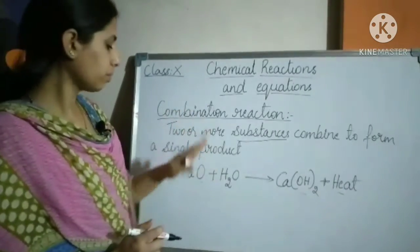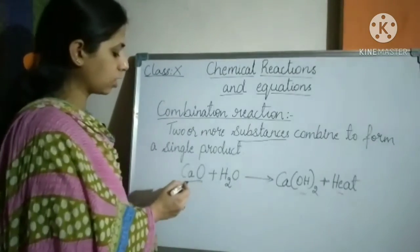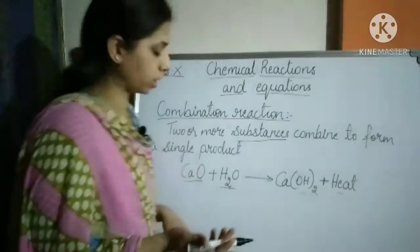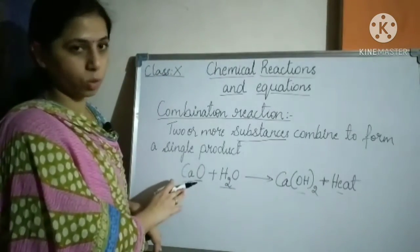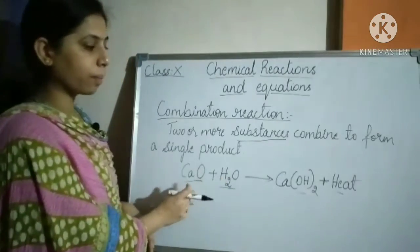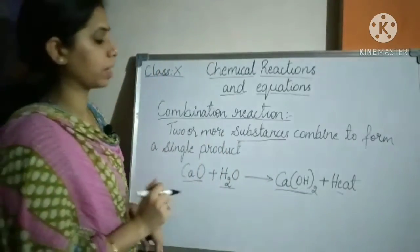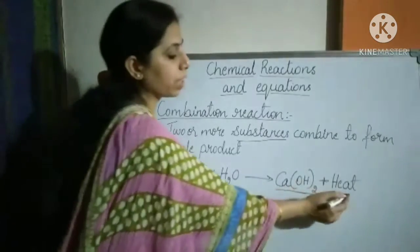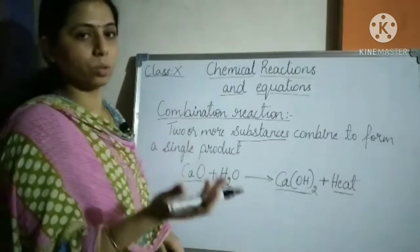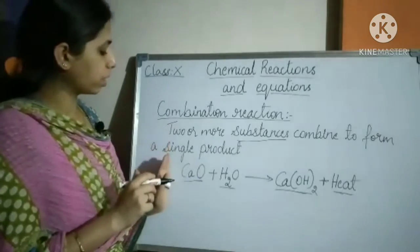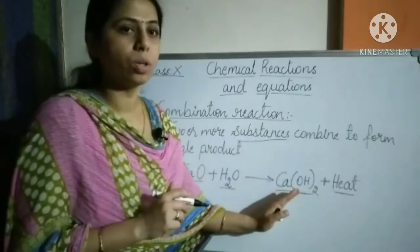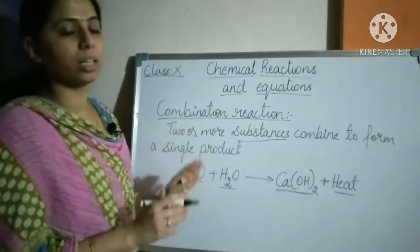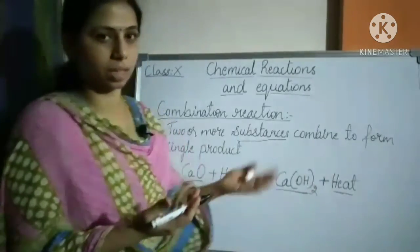Let's take an example. Calcium oxide combines vigorously with water, H2O. So it's two reactants: one calcium oxide and one water. If you combine them, one product is formed — calcium hydroxide, also called slaked lime. An enormous amount of heat energy is liberated. Two reactants form one product — that is a combination reaction, and heat energy is liberated.